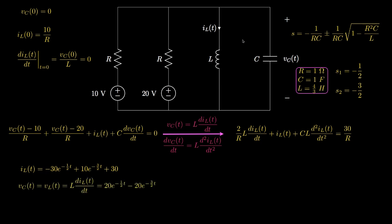Because the inductor voltage and the capacitor voltage are the same, we can solve for the capacitor voltage by differentiating the inductor current and multiplying by the inductance. Differentiating gives 15·e^(−t/2) minus 15·e^(−3t/2), and multiplying by the inductance of 4/3 henrys gives the capacitor voltage: 20·e^(−t/2) minus 20·e^(−3t/2). Knowing the capacitor voltage, we could also solve for the voltage or current across either resistor.